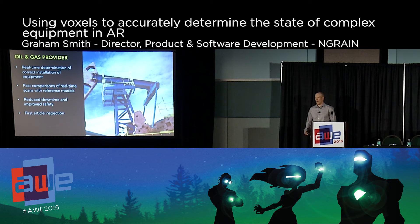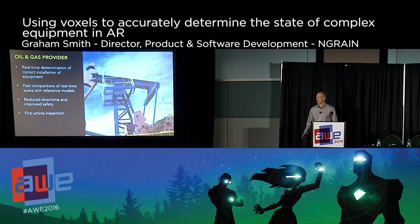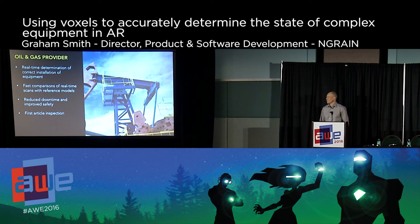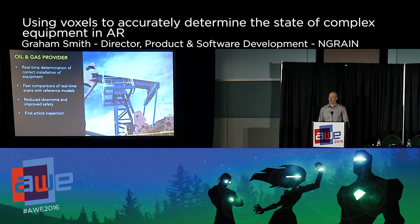That same algorithm can be used in a manufacturing scenario — we call it first article inspection. As a widget comes off the line, do a scan of it, compare it to the CAD used to create it, and make sure that widget was created correctly. We see that as an important use case, and again you can take it to the next level with augmented reality — overlay any differences in real time to show the user where there are anomalies.